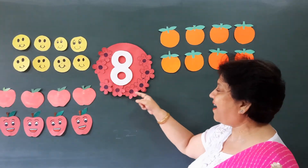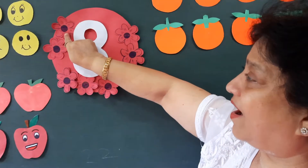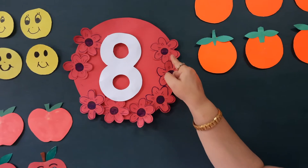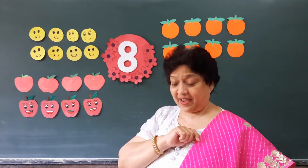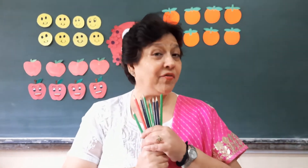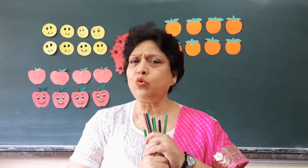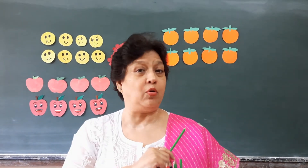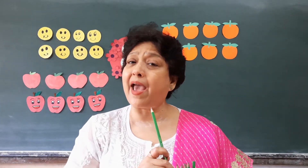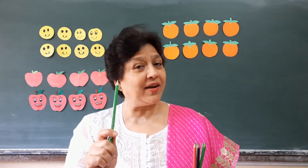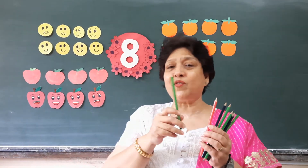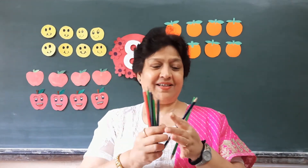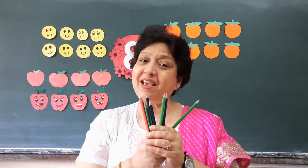Now I have pencils. You write with pencils. One, two, three, four, five, six, seven, eight. How many flowers? Eight. Now I have pencils — you write with pencils. One more thing: you have to do your work in your notebook with pencil only. Some children are saying they will use a pen — no. Pen will be used by mummy, papa, or ma'am. You will not use pen; you will write with pencil only. Okay? Now count pencils with ma'am. One, two, three, four, five, six, seven, eight. How many pencils? Eight pencils.